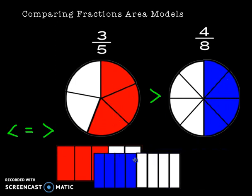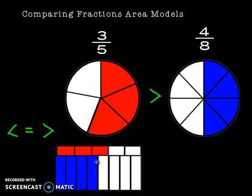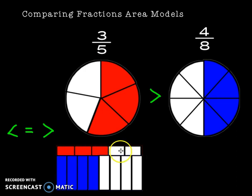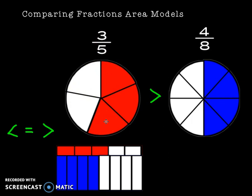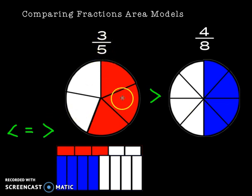Let me drag this over just to really prove it to you. Four out of eight is actually smaller than three out of five. Three and five are smaller numbers than four and eight, but because my parts are bigger and I am selecting three out of the five, it is actually a larger fraction than four out of eight. So, three-fifths is greater than four-eighths.